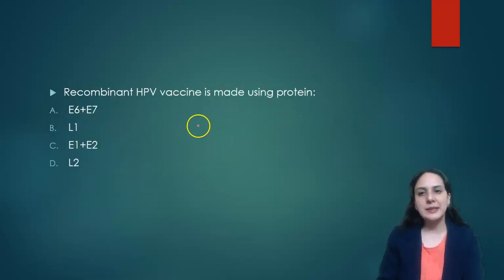Next question was: recombinant HPV vaccine is made using which protein? It is made using L1 protein of the capsid. So answer is B.